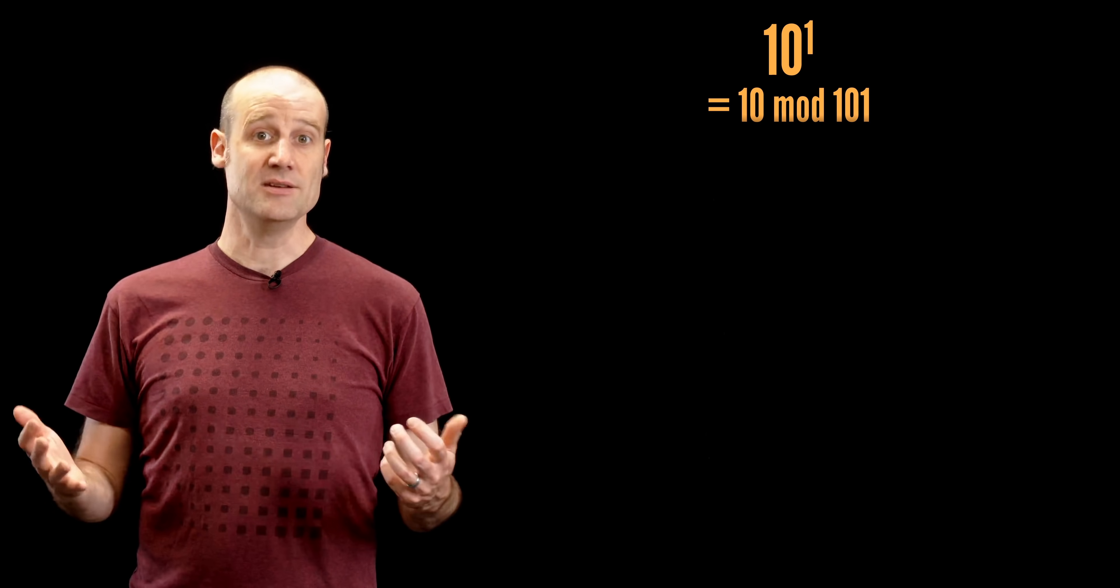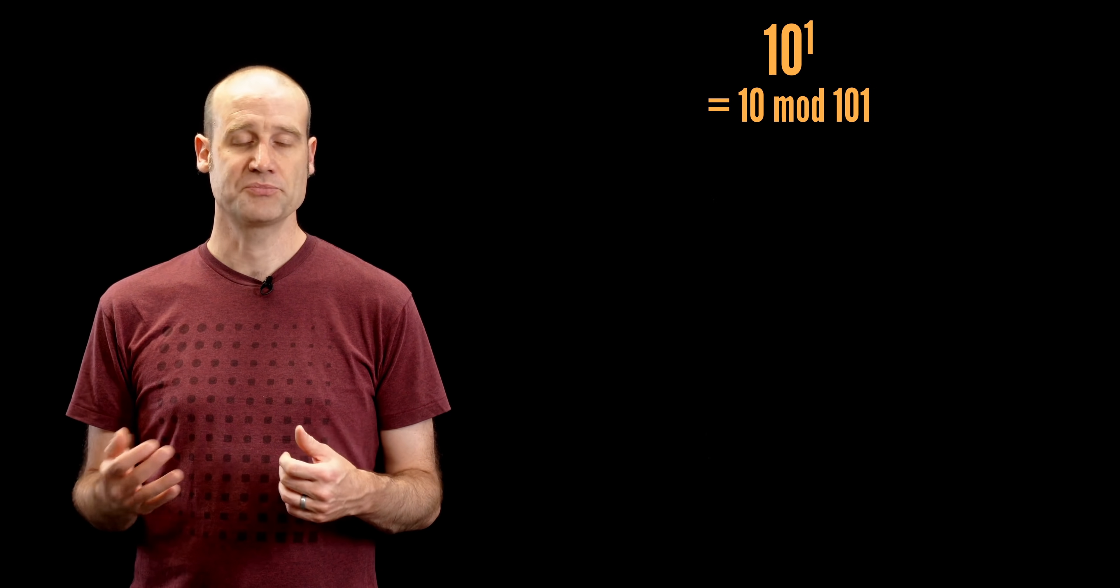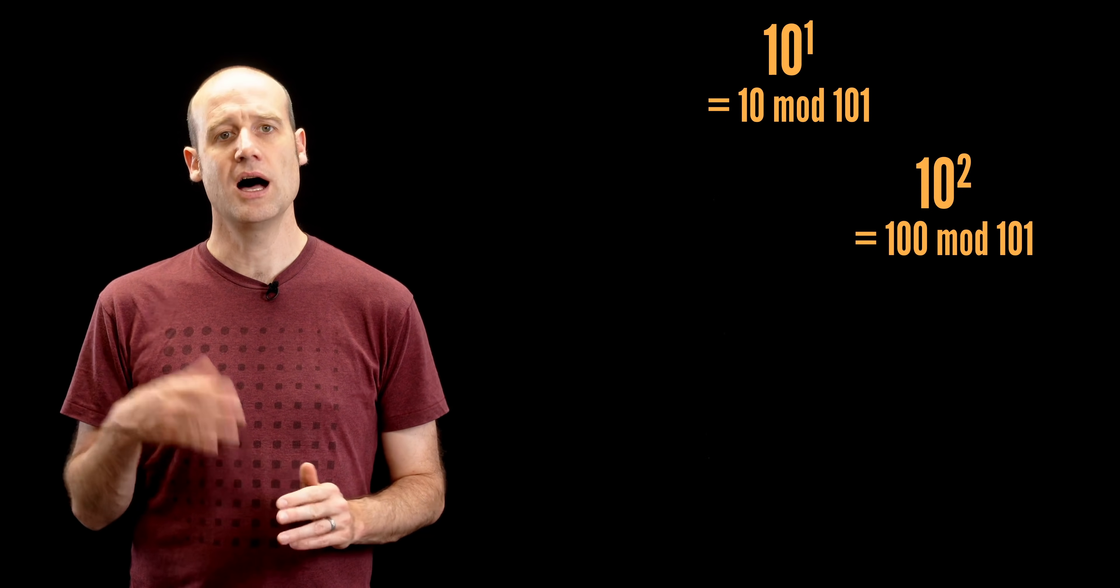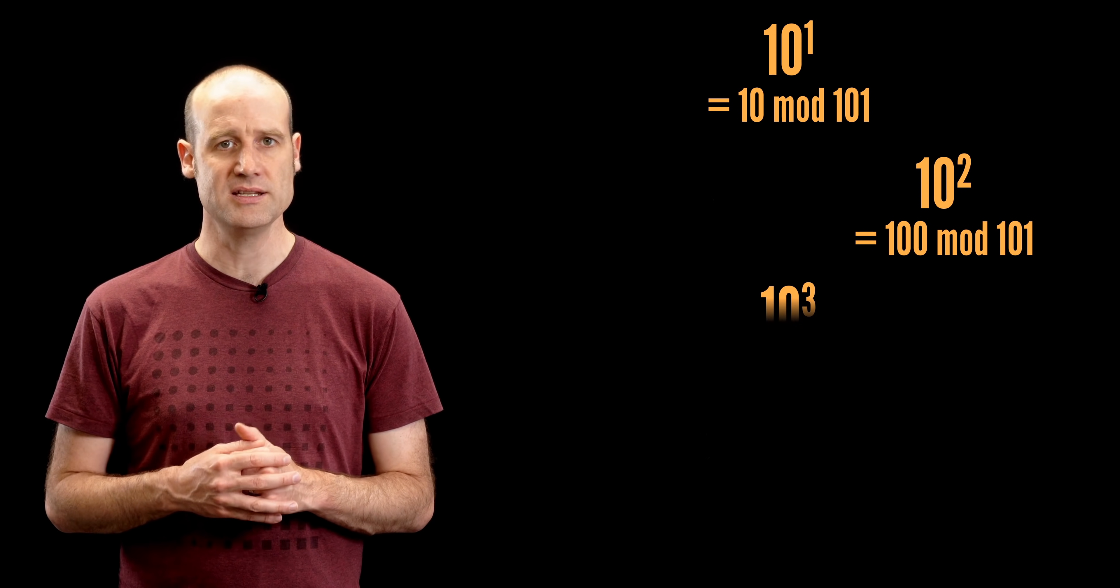So let's say we don't know what powers of 10 give us a remainder 1 mod 101. So we'll just start checking. 10 to the 1 is remainder 10 mod 101. Okay, 10 squared is remainder 100. 10 cubed is remainder 91.